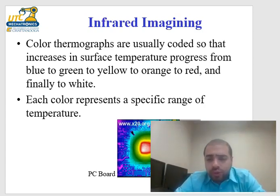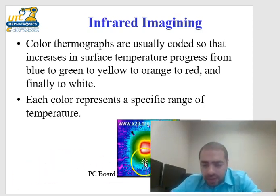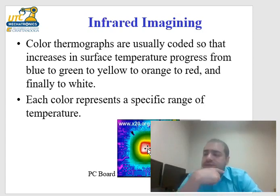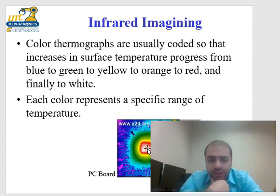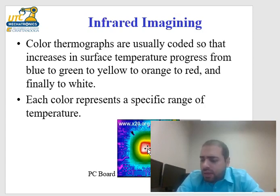Color thermographs are coded so that increasing surface temperature progresses from blue to green to yellow to orange to red to white, each color representing a specific temperature range. For example, on a PC board you can see the processor core is white, indicating a very high temperature. In a capstone project, students connected a circuit containing MOSFETs that operated in a region causing them to overheat.